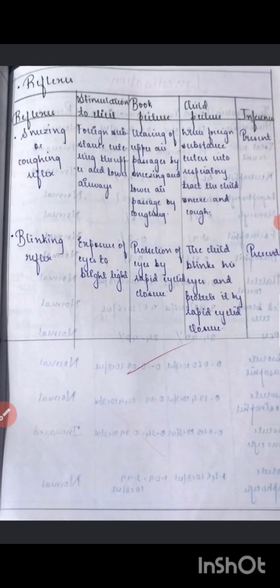For the urinary system, mention whether a Foley catheter is present and document urine output, including intake and output balance. Then document genitalia. For reflexes — if the baby is a newborn, mention all reflexes including Moro reflex, palmar grasp, plantar grasp, Dolls' eye reflex, sucking reflex, and swallowing reflex. For toddlers or preschoolers, only mention sneezing, coughing, blinking, and gag reflexes.